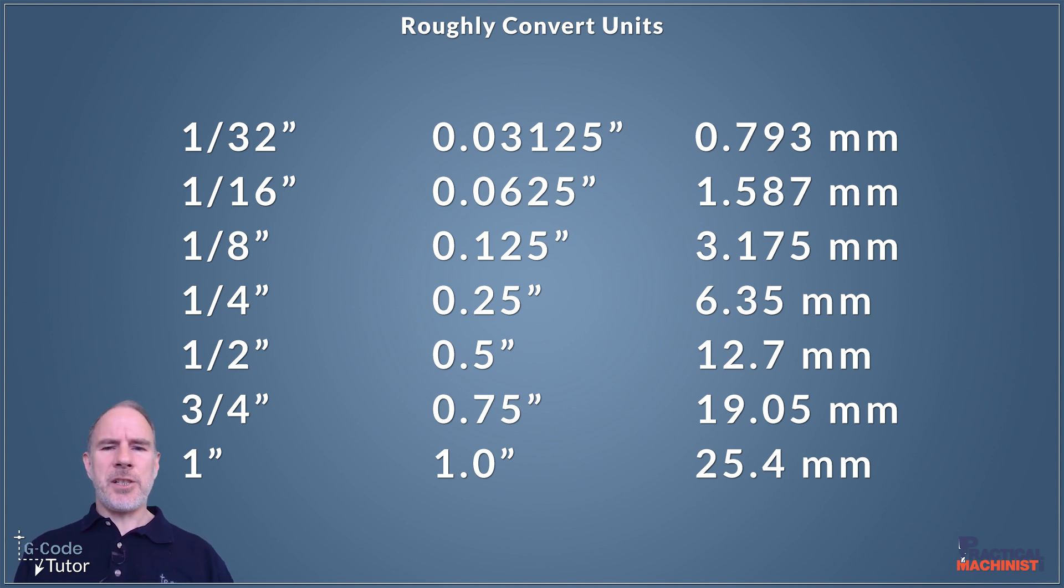This conversion chart shows us the rough equivalent of the fractions, the imperial decimal, and the metric equivalents. By remembering these, we can round these up or down to the nearest 0.1 of a mil. And then we can work out roughly in our heads what these are. And now we can add these together.